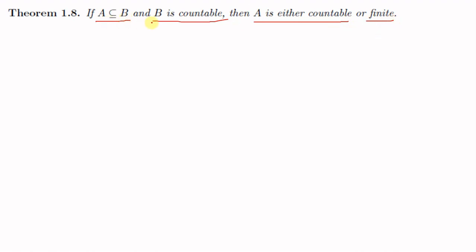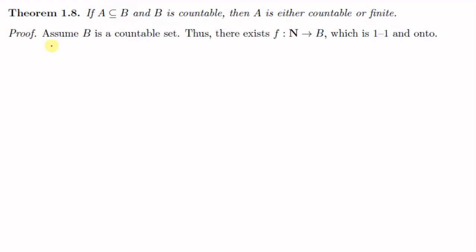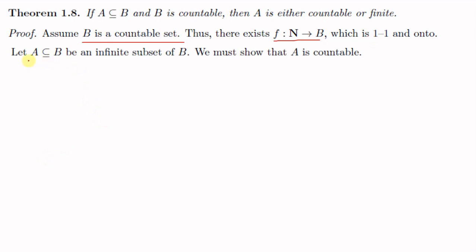In other words, we have to show that any subset of a countable set is either countable or finite. For the proof, we will first assume that B is a countable set. This means that there exists a function f from N to B which is one-to-one and onto. Now we will assume that A is an infinite subset of B, and we have to show that A is countable.